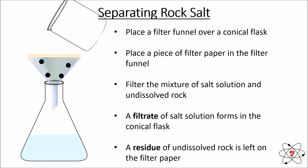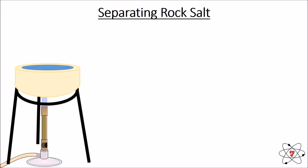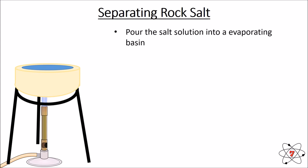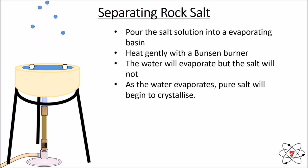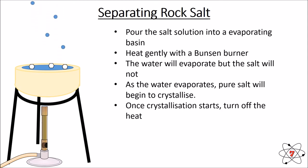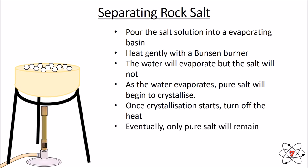We now have a mixture of salt and water in the conical flask. To separate the salt from the water, we pour the salt solution into an evaporating basin and heat it gently with a Bunsen burner. The water evaporates but the salt does not — as the water evaporates, pure salt particles begin to crystallize. Once crystallization starts, we turn off the heat. When all the water has evaporated, pure salt remains at the bottom of the evaporating basin.